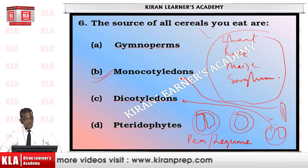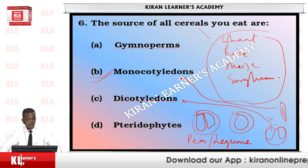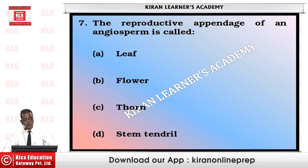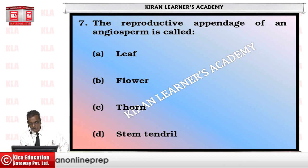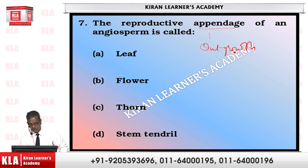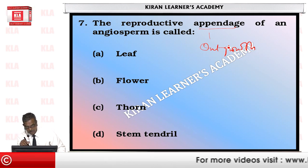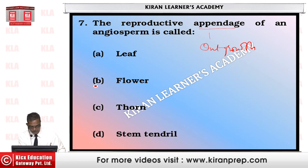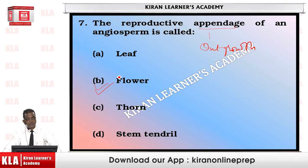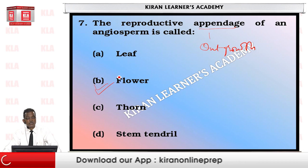The reproductive appendage of an angiosperm is called a flower. An appendage means an outgrowth, and a reproductive appendage is one that takes part in plant reproduction. Leaves, thorns, and stem tendrils do not take part in reproduction, so we are left with the flower, which bears the male and female reproductive organs in the form of androecium and gynoecium.